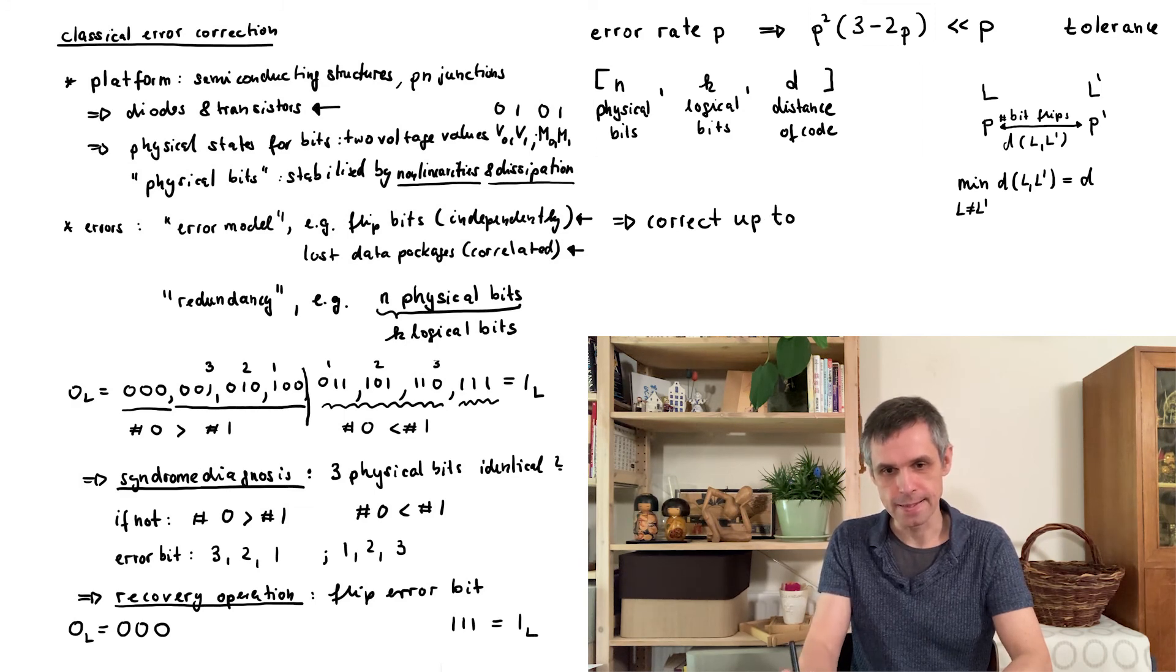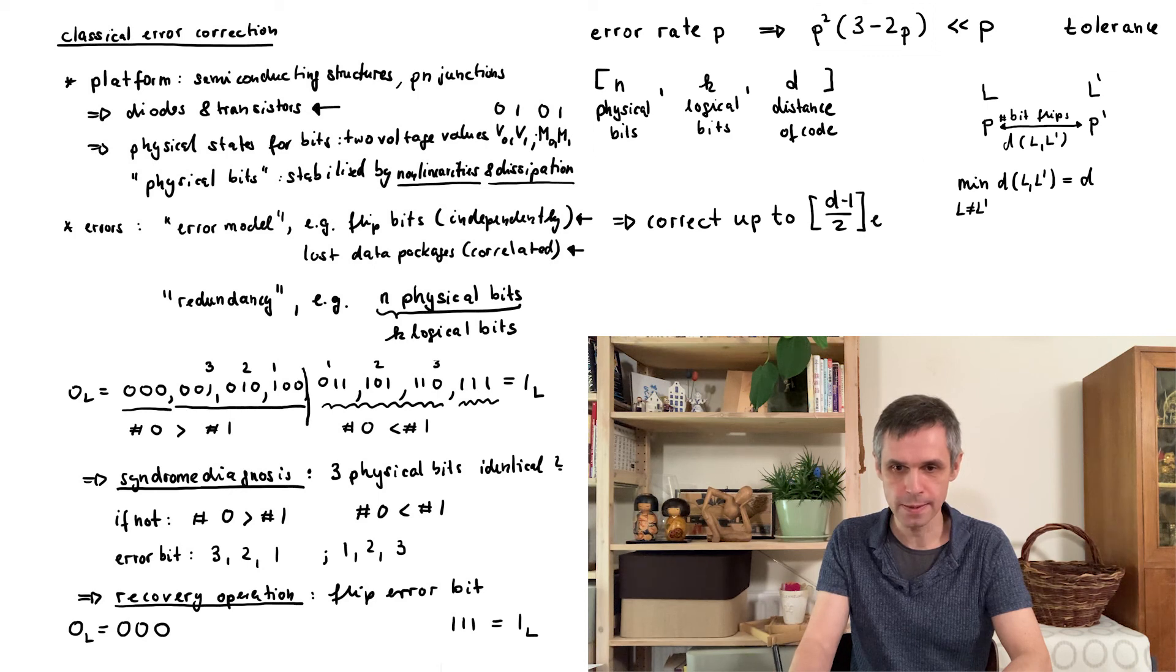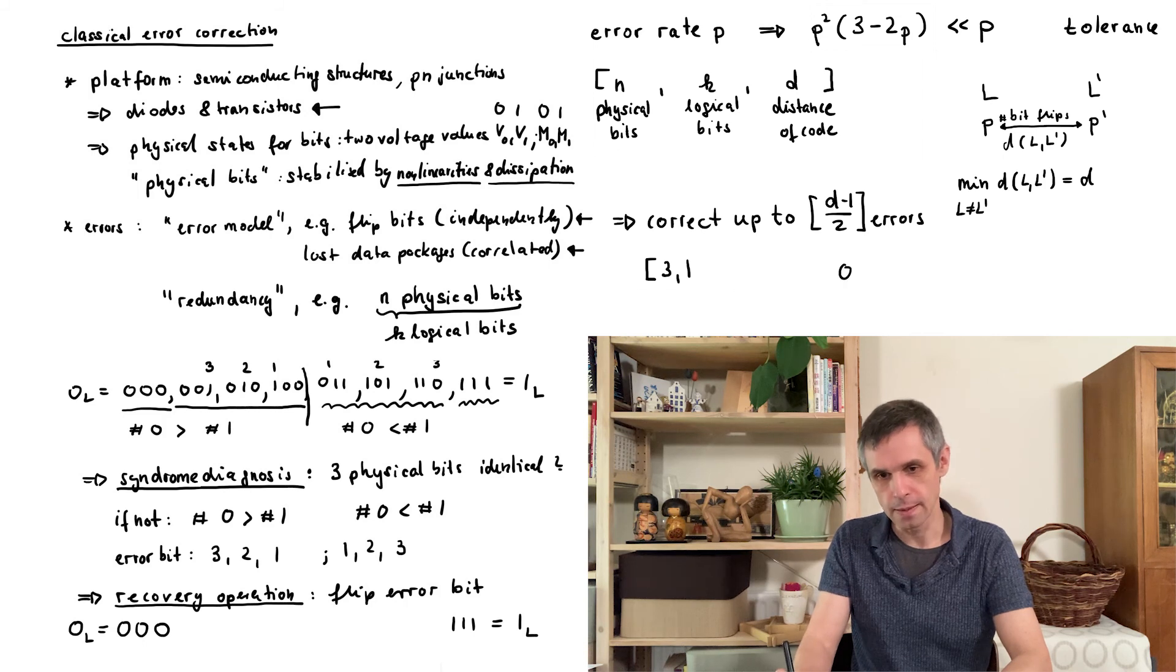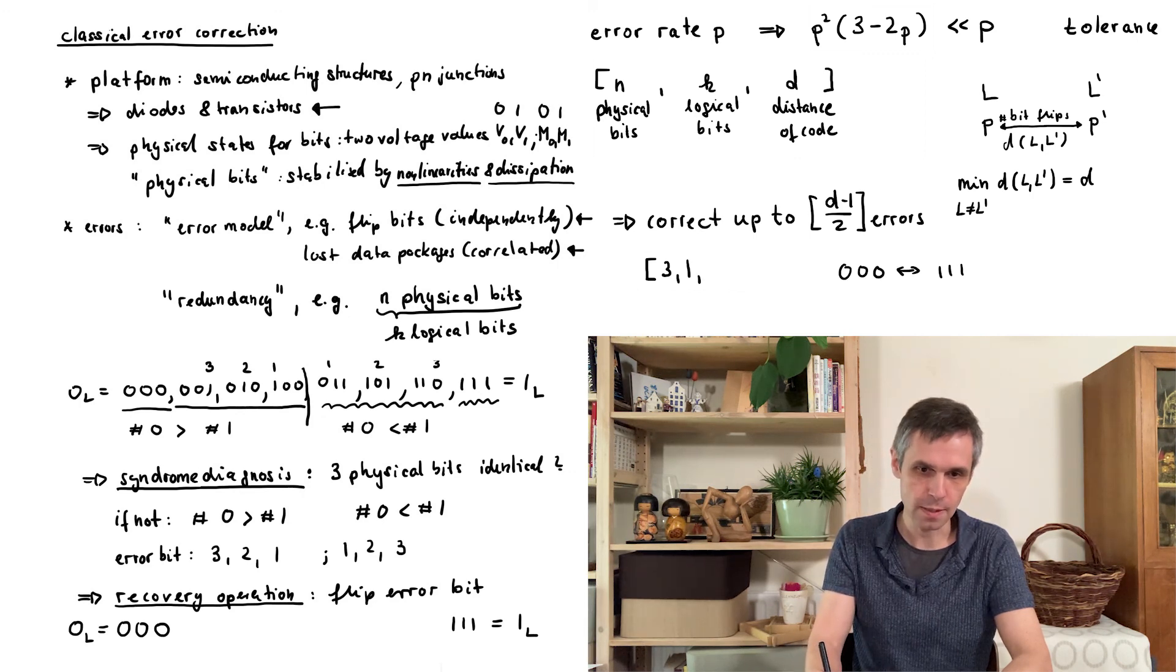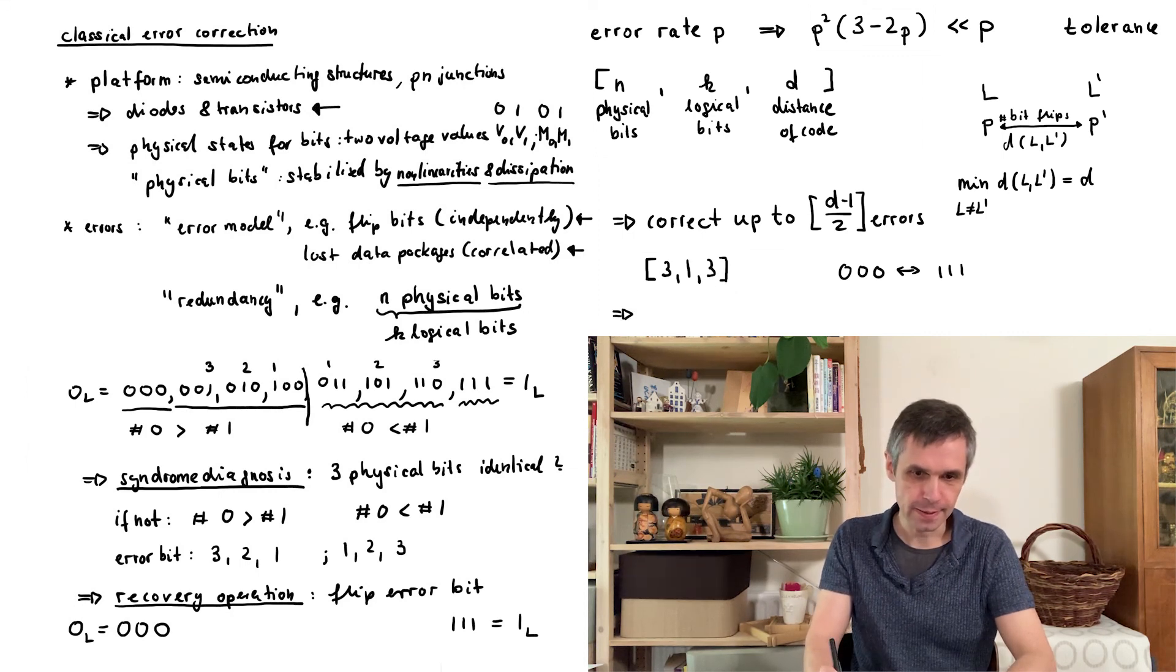Unless this exceeds this number here, so the integer part of the distance of the code minus one divided by two. In the example above we had three physical bits encoding one logical bit, and it takes us three flips of these bits to go from this state to this state in either direction. So our distance is also three, and in this case we can then indeed correct just one error.